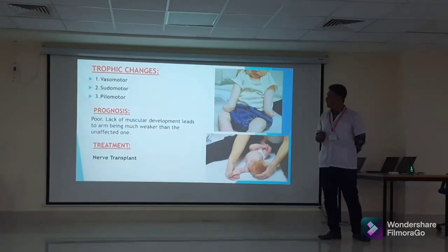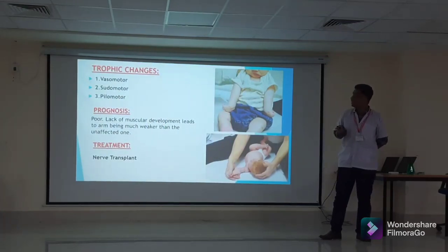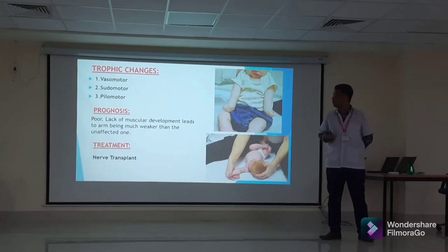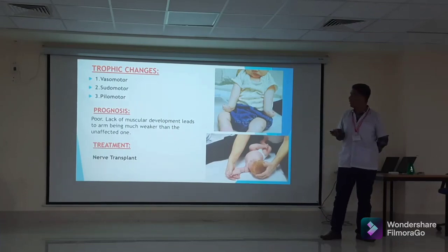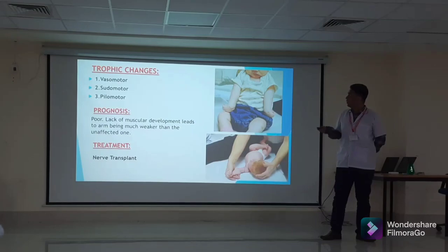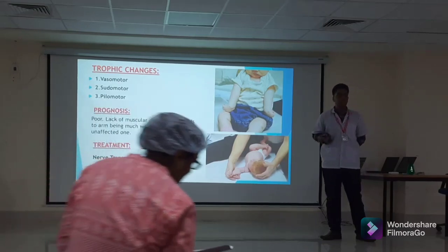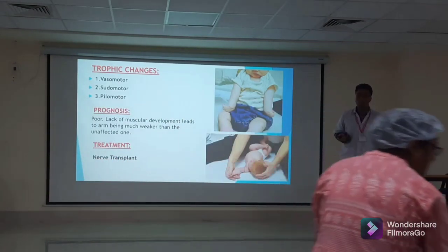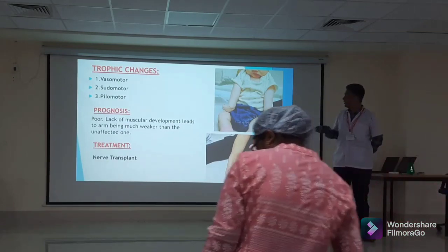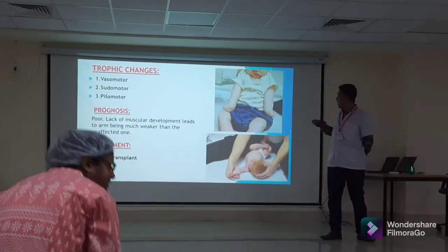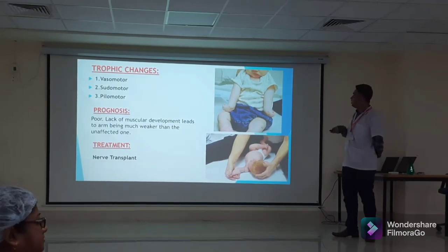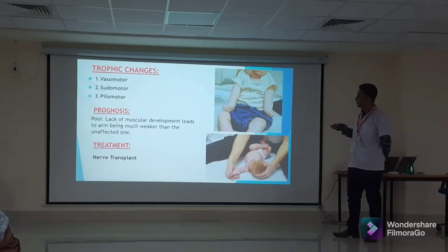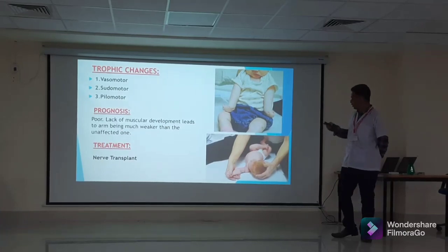Trophic changes include vasomotor change due to loss of vasoconstriction, leading to vasodilation and redness of the affected area; sudomotor change due to impairment of sweat glands, leading to dry and scaly skin; and pilomotor change due to loss of innervation of the arrector pili muscle. The prognosis is generally very poor, leading to lack of muscular development, with the arm being weaker than the unaffected one. Treatment may include nerve grafting.